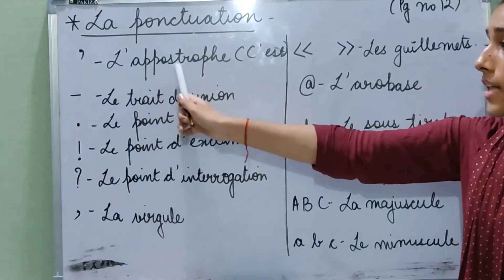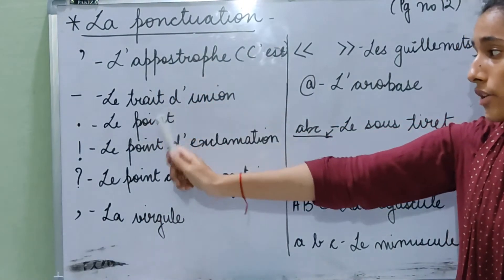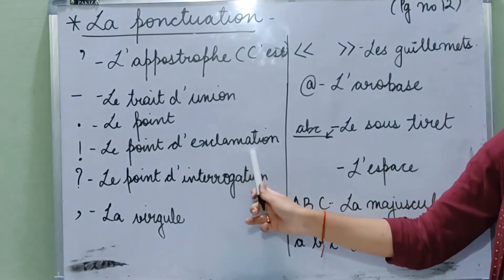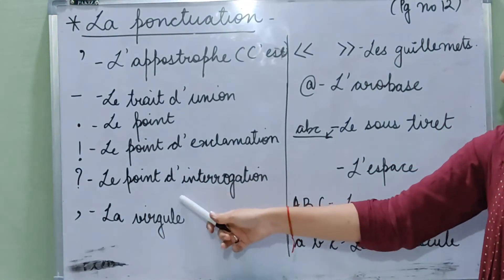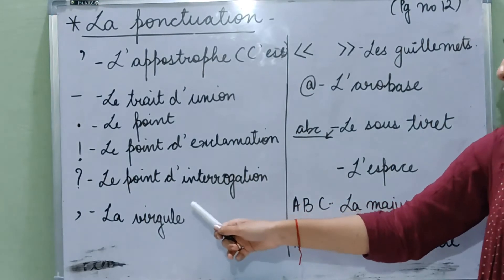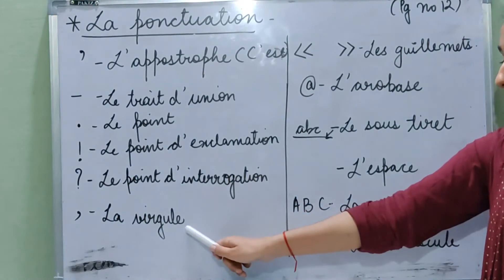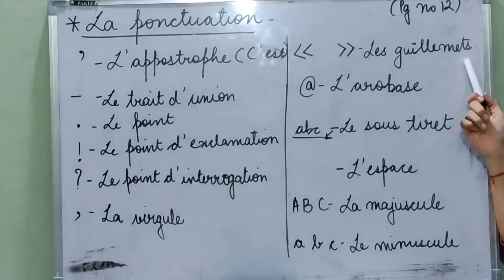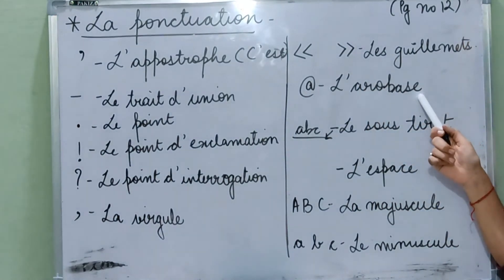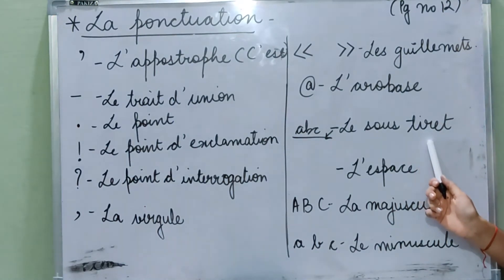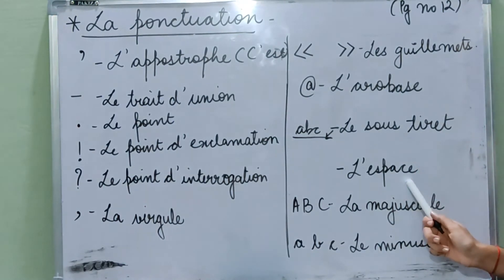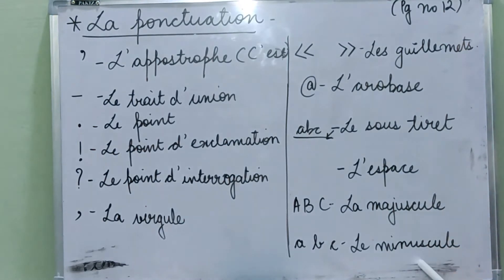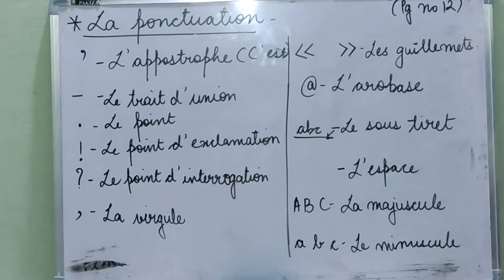So apostrophe is l'apostrophe. Hyphen is trait d'union. Full stop is le point. Exclamation mark is le point d'exclamation. Interrogation mark or question mark is le point d'interrogation. Comma is la virgule. Quotation marks are les guillemets. At the rate sign is l'arobase. Underline is sous-titré. Space is l'espace. Capital letters are la majuscule, and small letters are le minuscule.